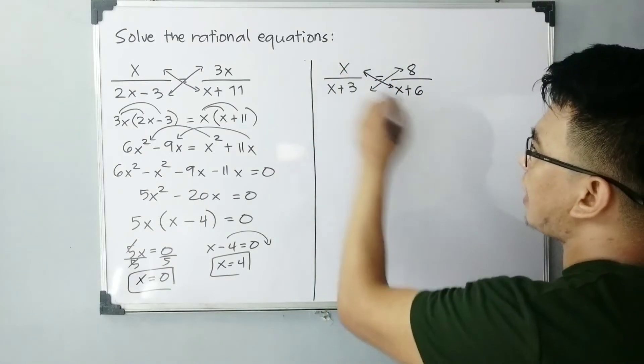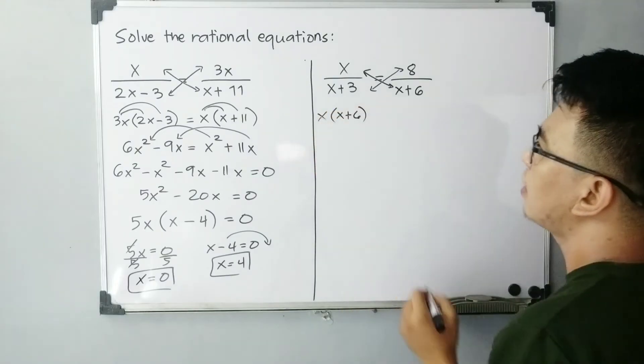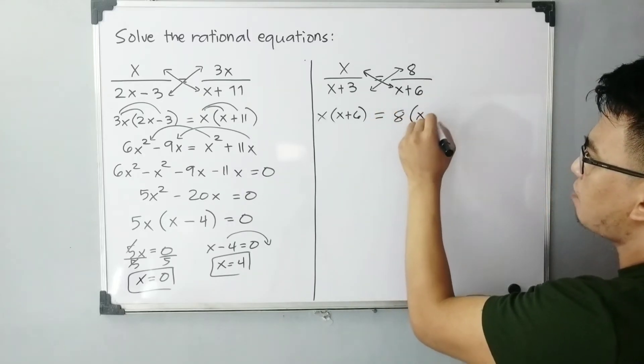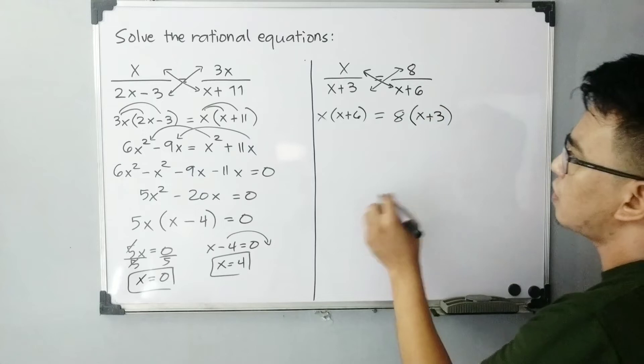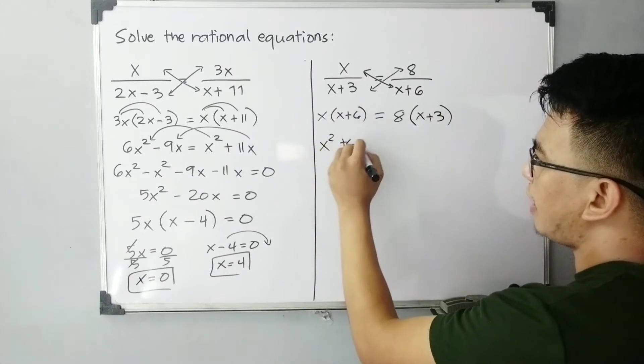So x times x plus 6. Then this one is equal to 8 times x plus 3. So by distributive property, multiplying this, that is x squared plus 6x.